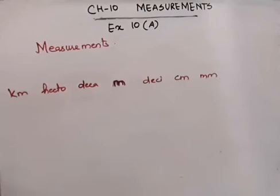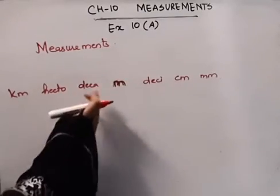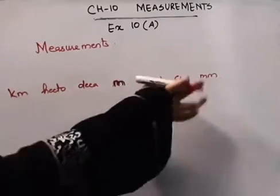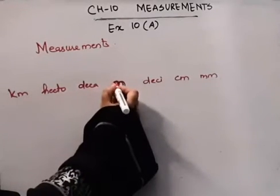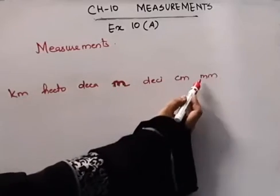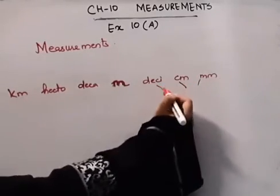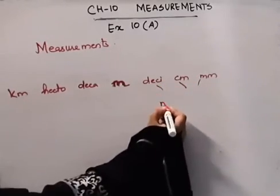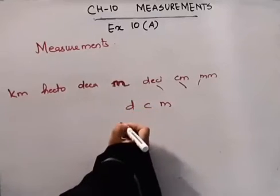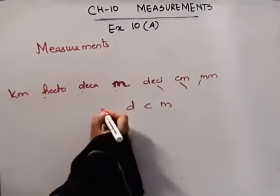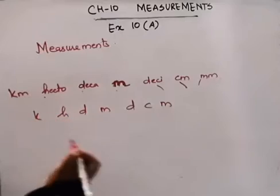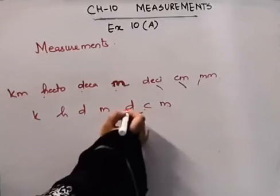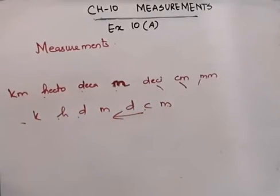Now we will remember how to keep track of the standard unit. There are three units on the left side and three on the right hand side. There are different methods to remember them. The order going up is: milli, centi, deci, then the standard meter, then deca, hecto, kilo. Clear?